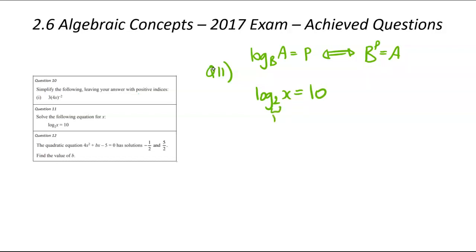So our base is 2, our answer is x, and our power is 10. So we're going to have 2 to the power of 10 is equal to x. This here will be nice and simple to solve. Grab your calculator out. 2 to the power of 10: 1,024.